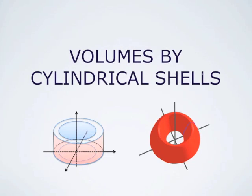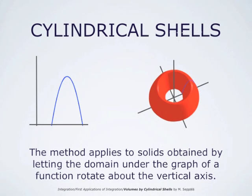Volumes by cylindrical shells. The method of computing volumes by cylindrical shells applies to solids obtained by letting the domain under the graph of a function rotate about the vertical axis. Here in this picture, you see the graph of a parabola. The domain bounded by that graph and the x-axis rotates about the y-axis, forming this red solid which is a little bit like a Christmas cake. One can compute the volume of such a solid by slicing, but it is much more convenient to consider a cylindrical shell approximation and the formula obtained by that.